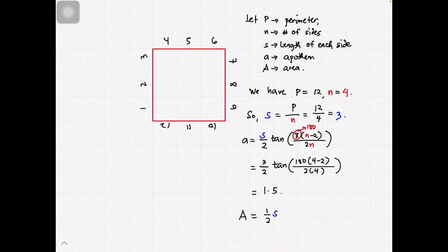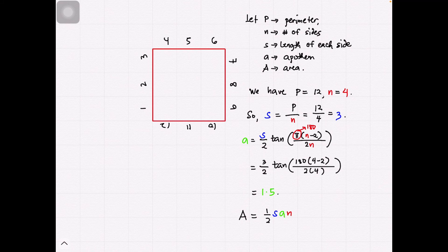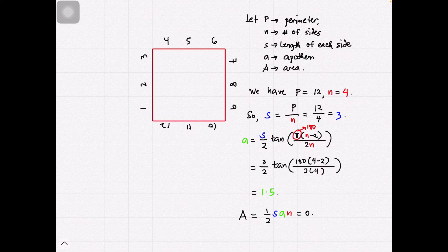With the solved apothem through the use of a given perimeter, we can now solve for the area. And its formula would be 1 half S A N, or that would be the product of the length of each side, apothem, and the number of sides. And since 1 half is the same thing as 0.5, we now have this.